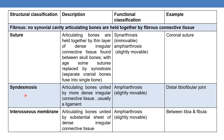The next type of fibrous joint is syndesmosis. Here, the articulating bones are united by more dense irregular connective tissue, usually a ligament. The functional classification of syndesmosis is amphiarthrosis — all syndesmoses are slightly movable. An example of syndesmosis is the distal tibiofibular joint.